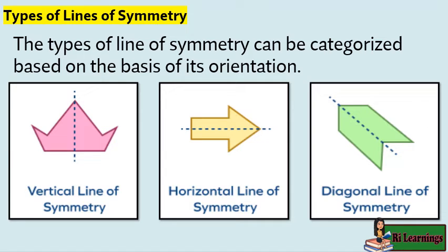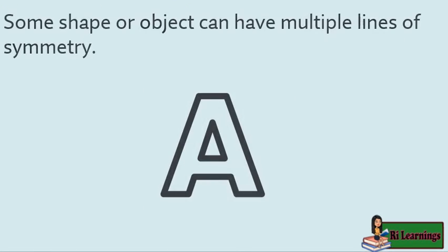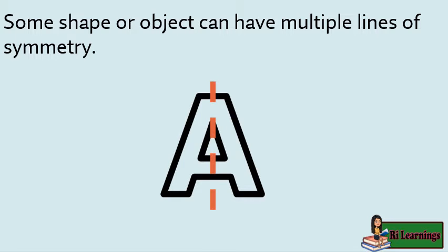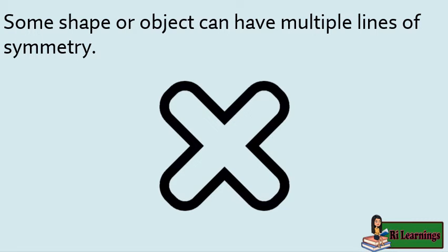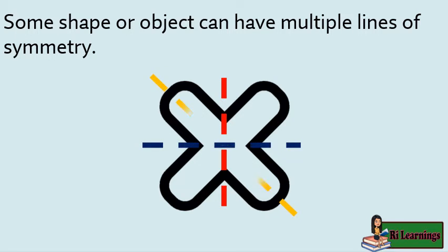The diagonal line of symmetry goes sideways or slanting in an object. Some shapes or objects can have multiple lines of symmetry. Shapes with one line of symmetry have only one line that divides them into identical parts. The axis of symmetry can be horizontal, vertical, or diagonal, just like this small letter x.